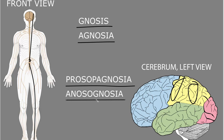Anosagnosia often occurs with lesions of association cortex in the parietal lobe of the right cerebral hemisphere — here we're looking at the left, but on the other side. These are just a few examples of agnosia, and we'll get into lots more later.